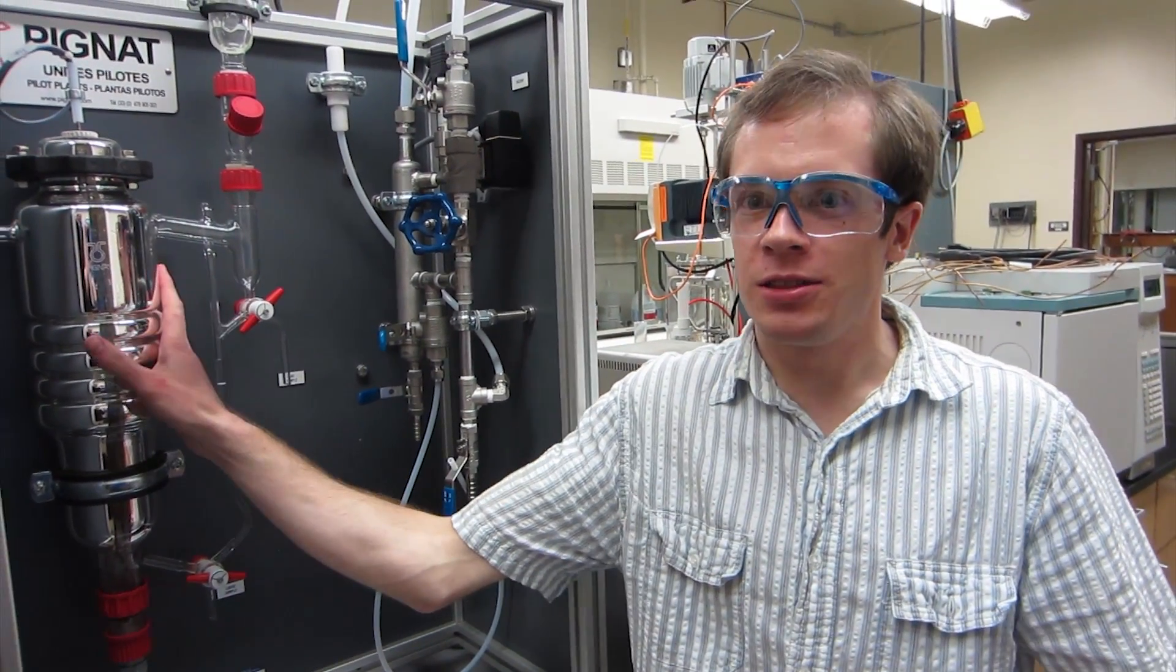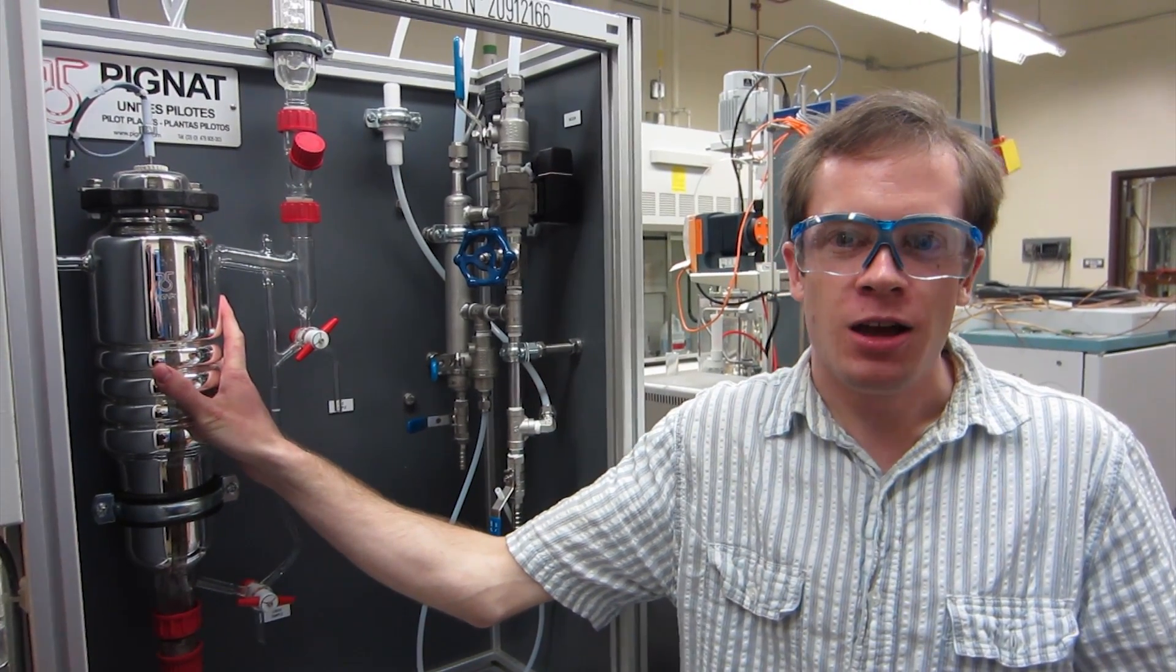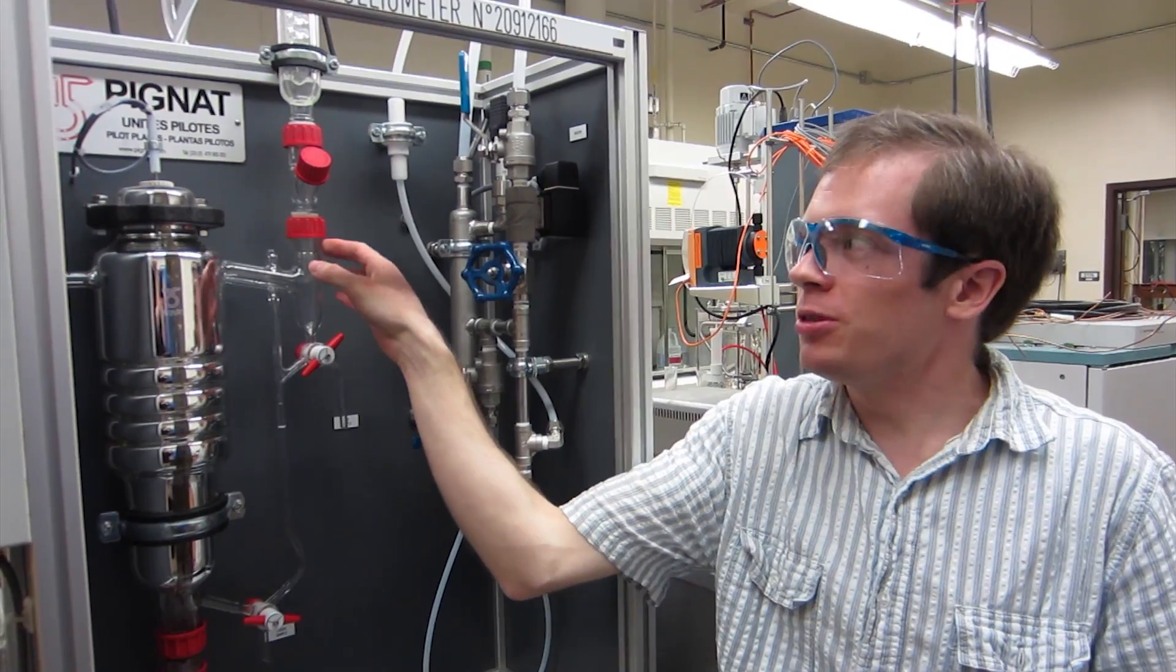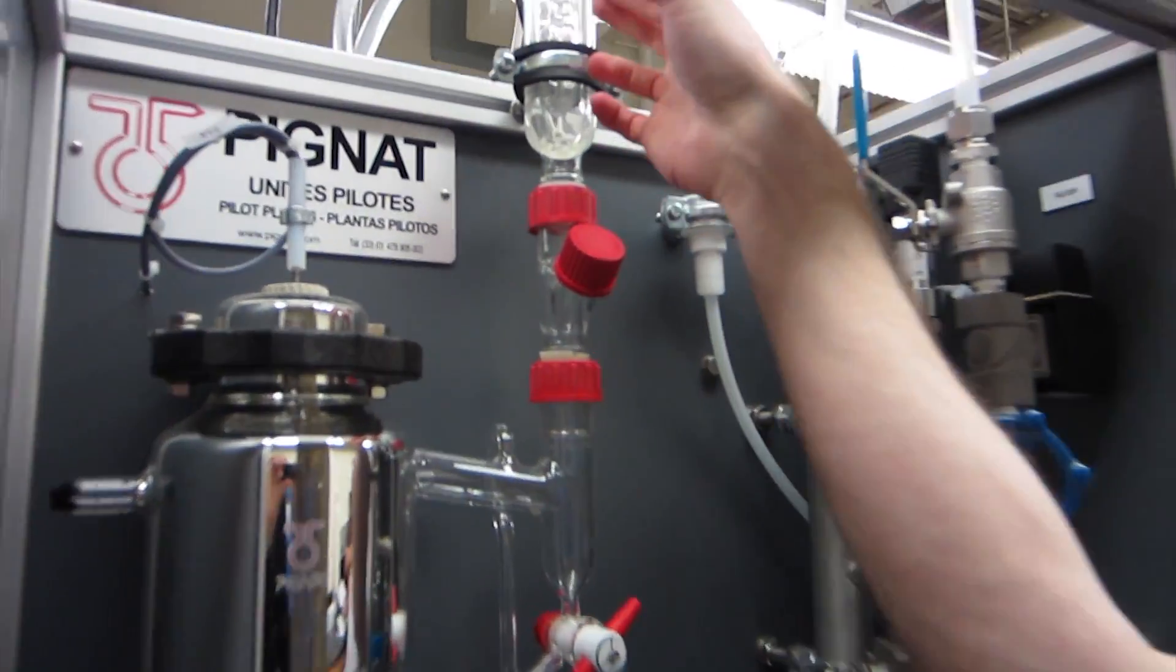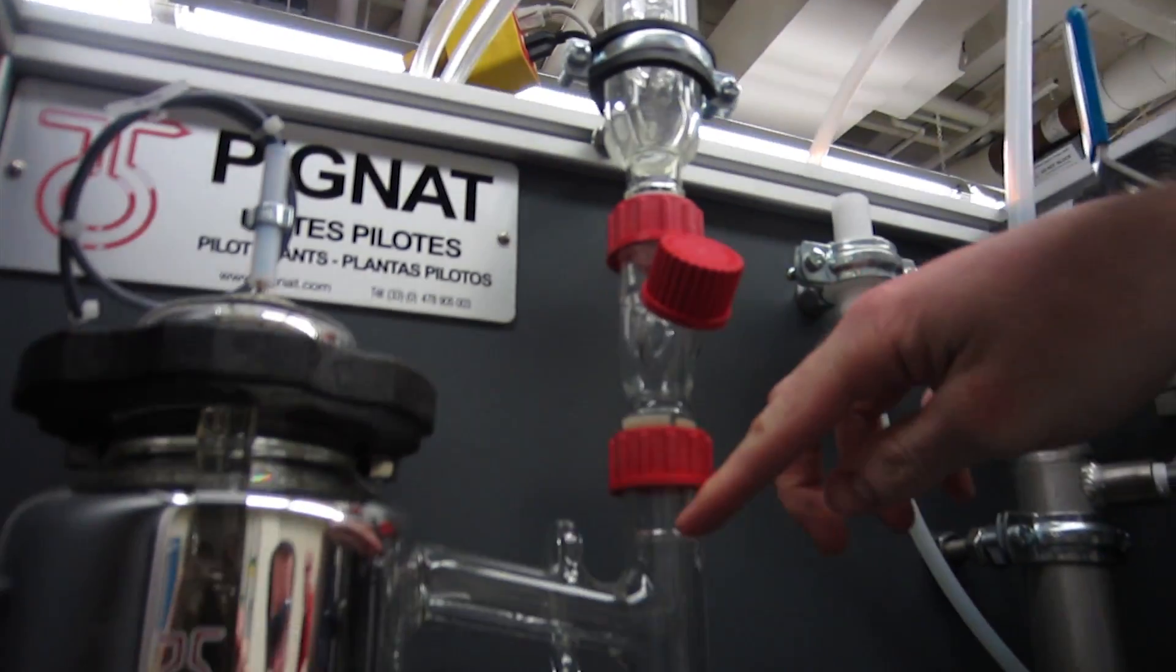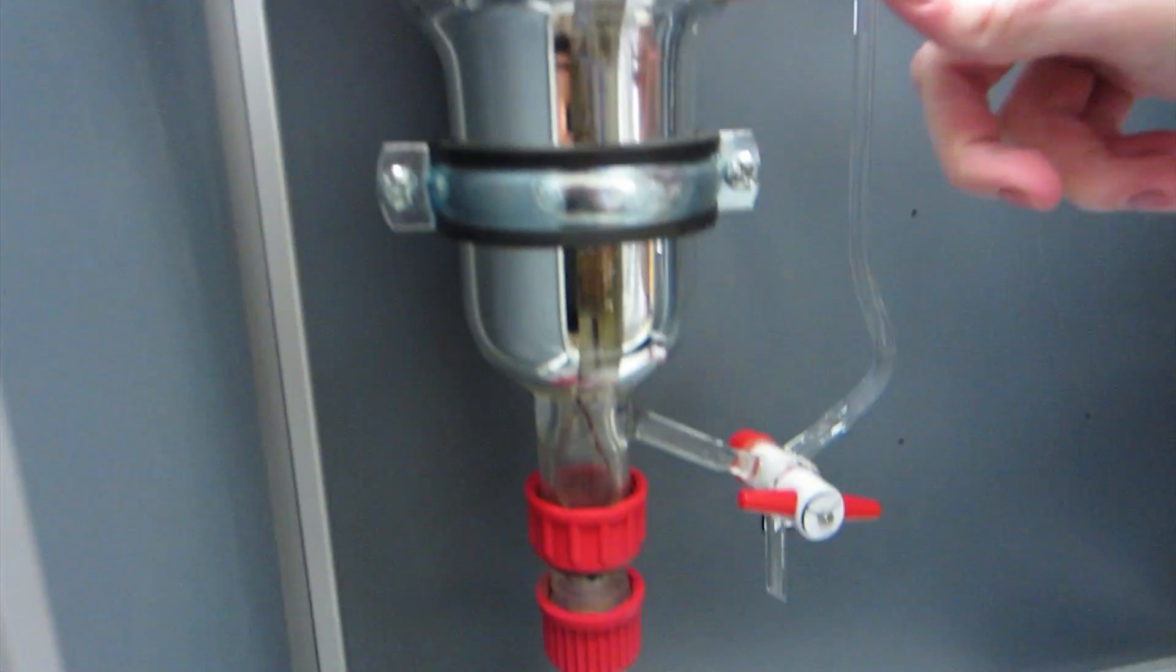So here we've got the reboiler, we just call it the pot usually, where we're boiling the mixture we've got. The vapor comes up through this area up into the condenser here where it all condenses, falls back down through here, and then is fed back into the reboiling pot.